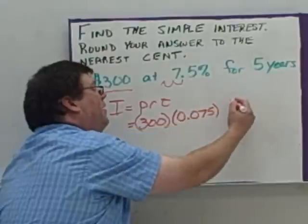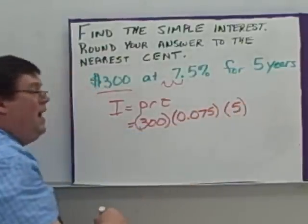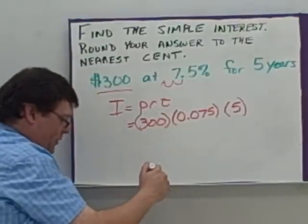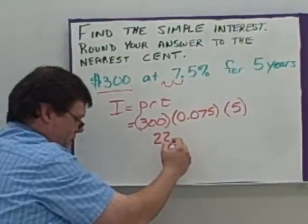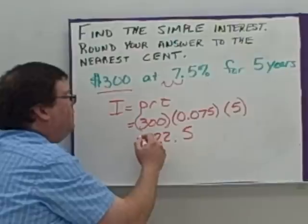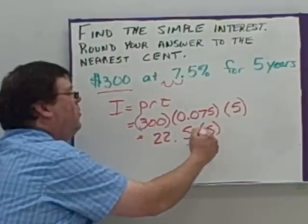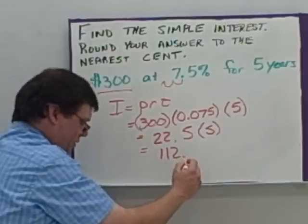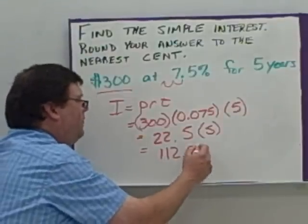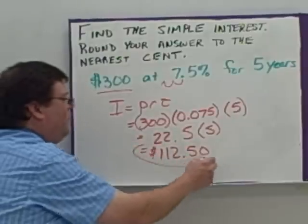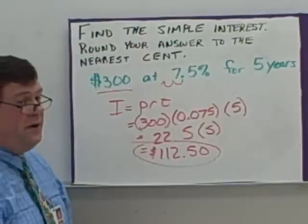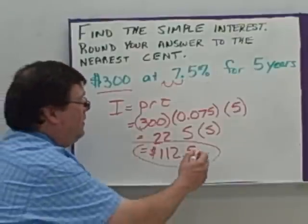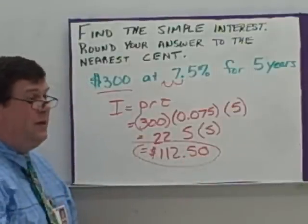T is time — in years — and it's five, so I plug in 5. I start by multiplying the first two numbers: 300 times 0.075 gives me 22.5. That still needs to be multiplied by the five, giving me $112.50. My calculator won't show that extra zero, but we're talking about money — there's no such thing as $112.5. Always show two decimal places with money.